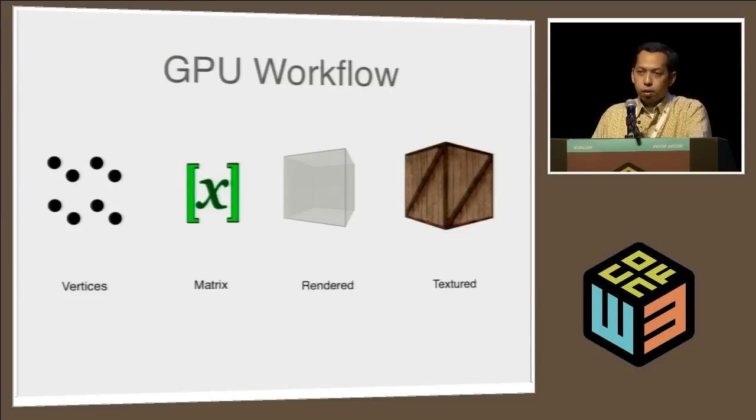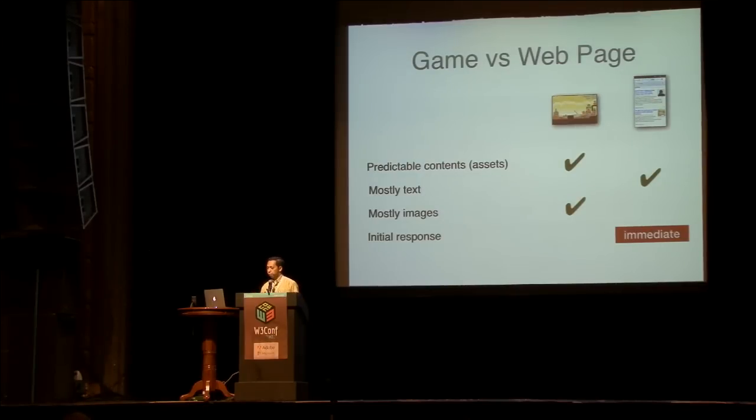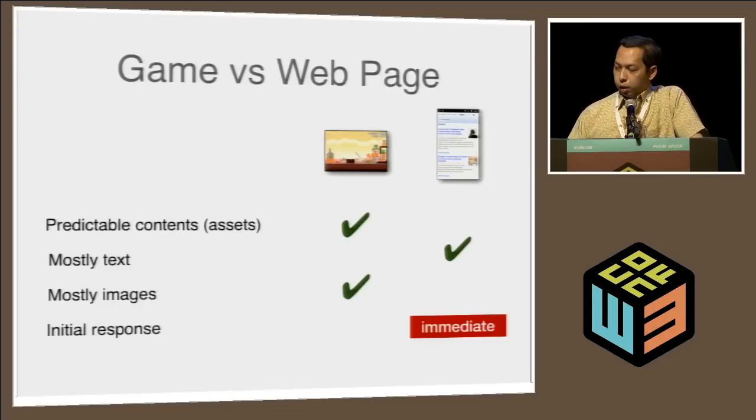Let's see how web page rendering takes advantage of the GPU. First, we need to distinguish between games and web pages — web pages can be as simple as the Google homepage or as complicated as the New York Times, and they don't have predictable content. The browser needs to deal with anywhere from two kilobytes to several megabytes of content. On web pages you see mostly text, and GPU is not necessarily optimized for text rendering. Also, the initial response plays an important role — you can wait a few seconds for an Xbox game to start, but not for a web browser.